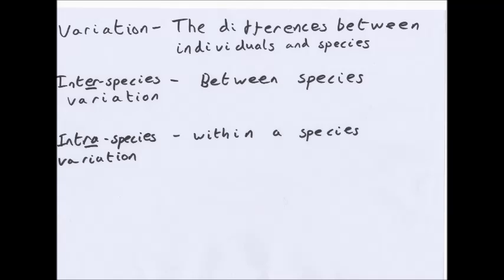You have interspecies variation, that is between species, so the variation between us and monkeys. And intraspecies variation, the variation within the species, so between you and your mum.